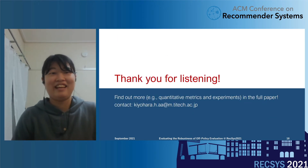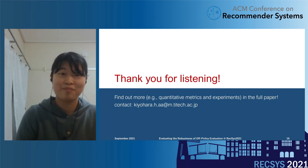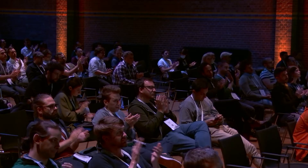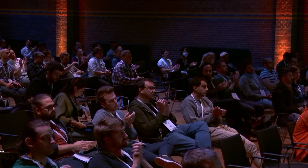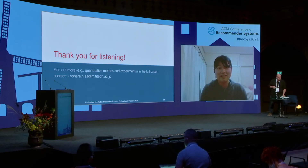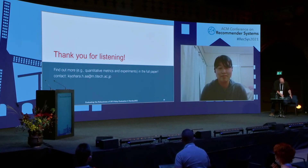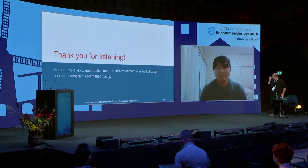Thank you for listening, and I'm happy to take any questions. There is a question about which e-commerce platform was tested. It was a Japanese e-commerce platform where they optimized coupon distribution to users, and we applied OPE variations in that application.